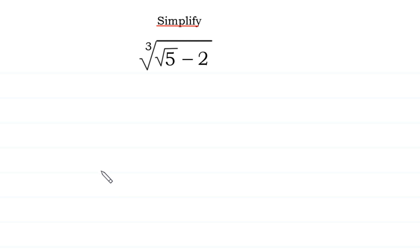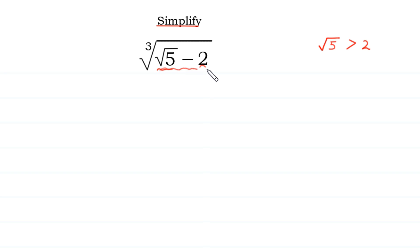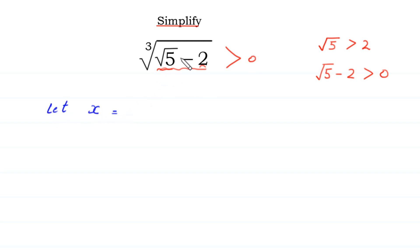Hello, welcome to how to solve this very nice radical expression: cube root of square root of 5 minus 2. Since square root of 5 is greater than 2, the expression square root of 5 minus 2 must be greater than 0. So this whole expression, cube root of square root of 5 minus 2, must be greater than 0. Now, let's suppose that x is equal to cube root of square root of 5 minus 2.